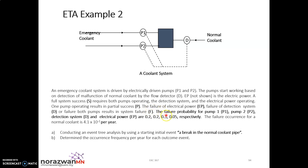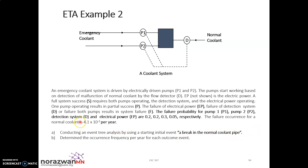The failure probabilities given are: 0.2 for P1, 0.2 for P2, 0.3 for detection system D, and 0.05 for electrical power EP. The failure occurrence frequency for a normal coolant pipe break is 4.1 × 10⁻² per year — this is your initiating event frequency. With the initiating event frequency and failure probabilities, you can now develop your event tree analysis.